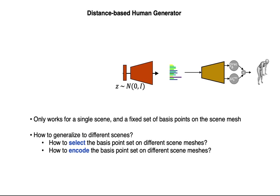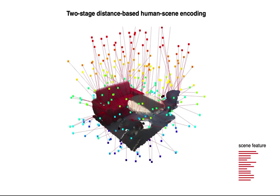The question is how to generalize to different environments — specifically, how to select and encode BPS on different scene meshes. To this end, we propose a two-stage distance-based human scene encoding. We randomly select a fixed set of basis points in space covering the scene, then use the minimum distances between the fixed BPS in space and the scene mesh vertices as the scene feature.